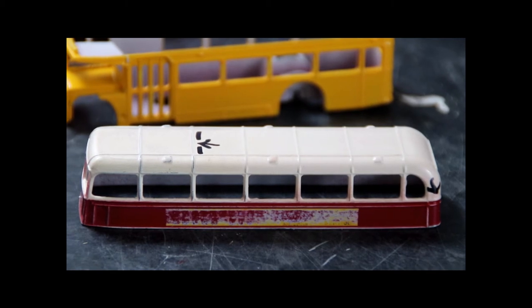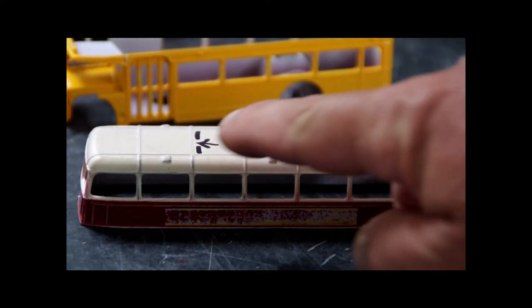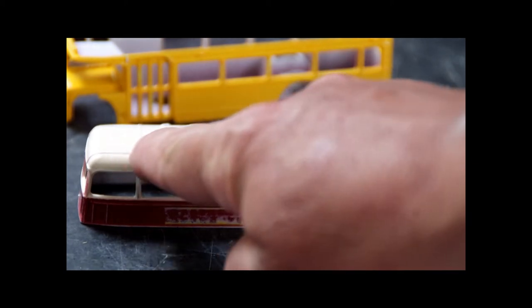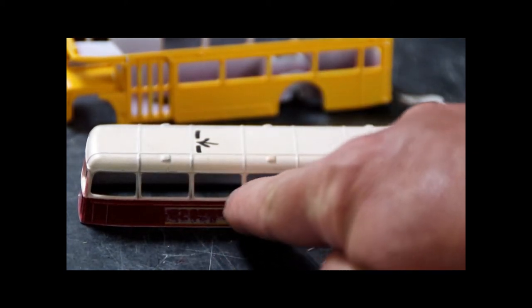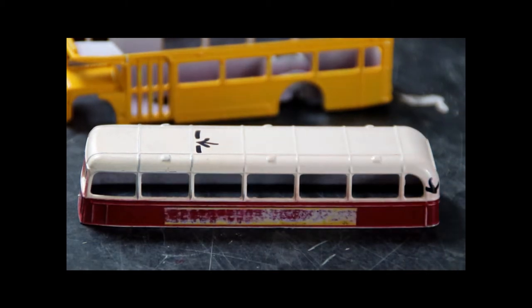You can see that I've already marked on the donor model where I want my cuts to be and it will involve slicing the roof here so this portion will be retained and all of the window pillars between there and the rear of the vehicle and round of course on the other side.